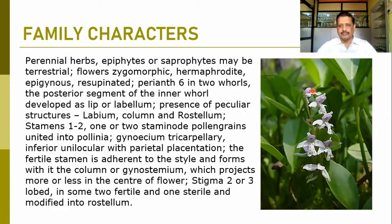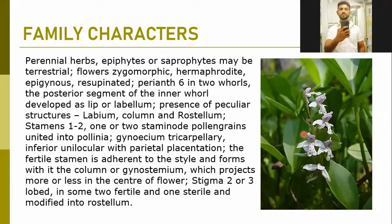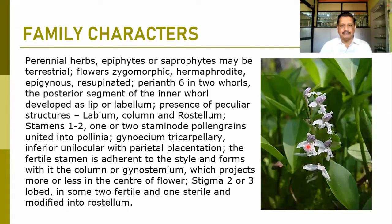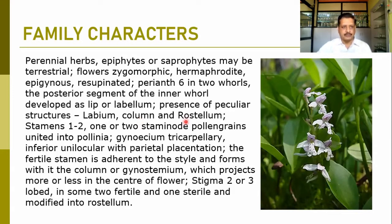Flowers are mostly zygomorphic — you can observe the zygomorphic flowers here. They are bisexual in nature and epigynous, meaning the ovary is inferior in this family. The perianth whorls are normally six in two whorls, a three plus three combination. The posterior segment of the inner whorl is developed into a lip or labellum. This is a typical structure — the specialty of this family — with development of the labellum, column, and rostellum.